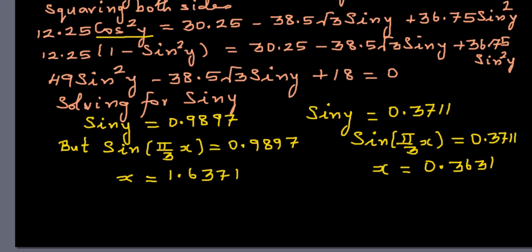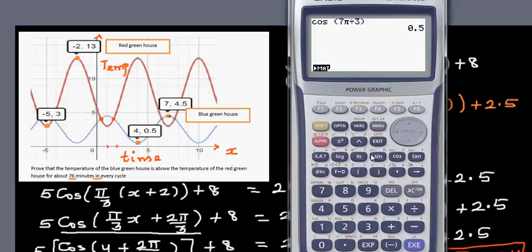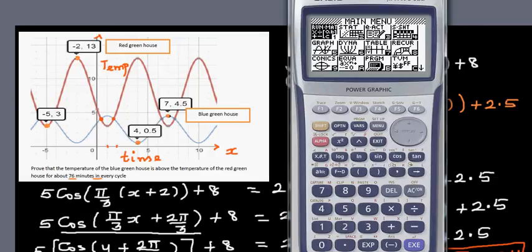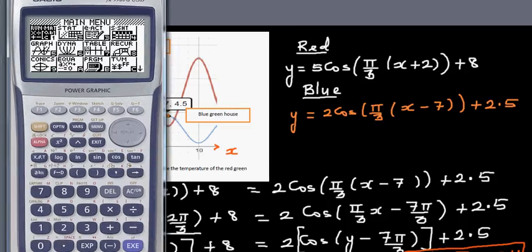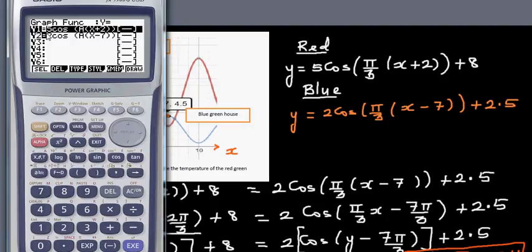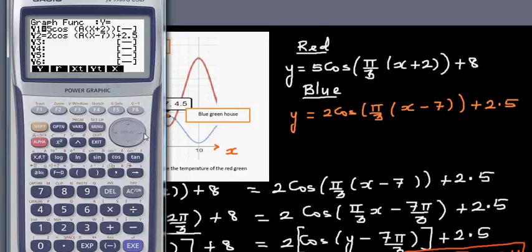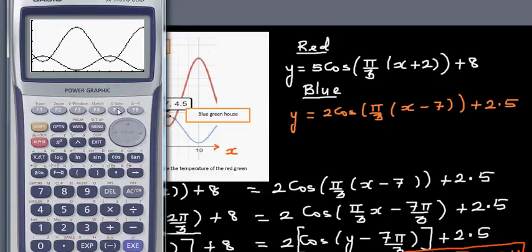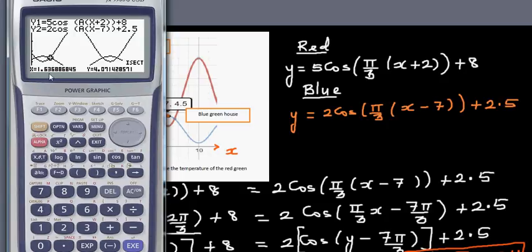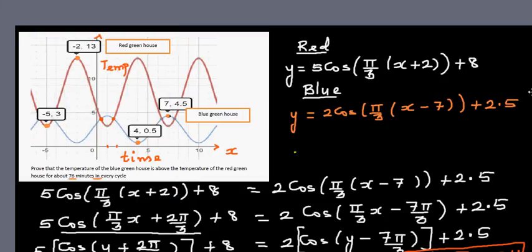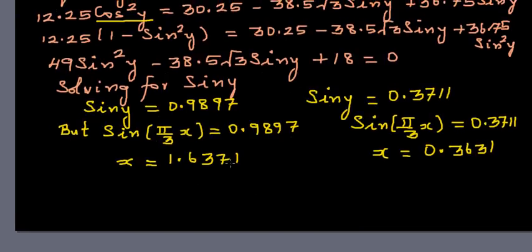We can verify this on the graphic calculator. I've already saved the equations — using π/3 stored as variable a. Going to the graph and using G-Solve for the intersection, we get x = 0.3631 and x = 1.6369, which closely matches the algebraic answer of 1.6371.